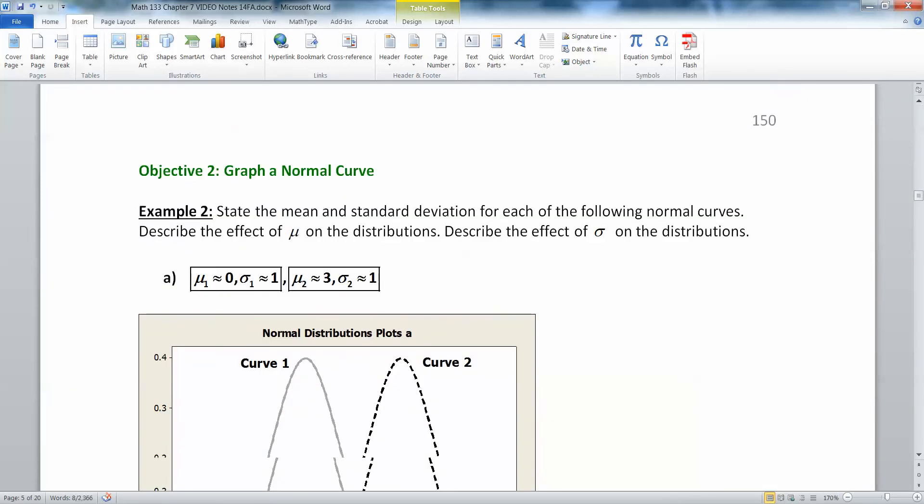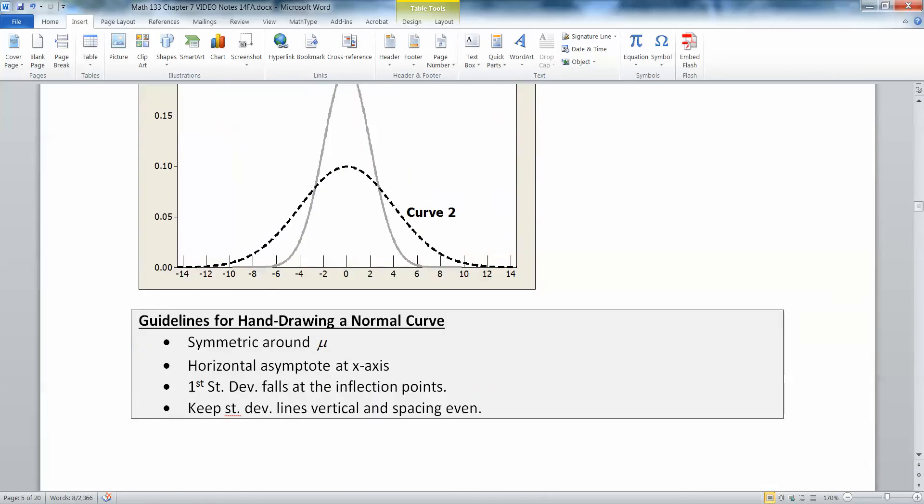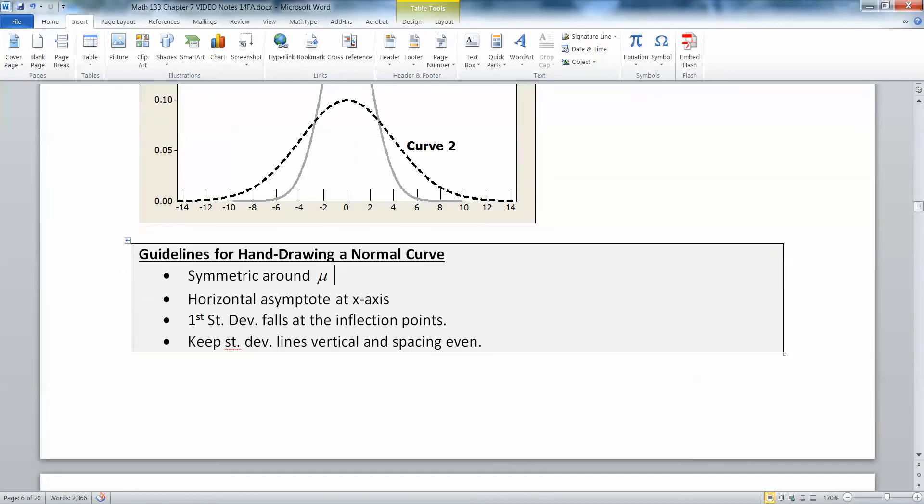All right. Now you're going to be drawing a lot of these by hand. So when you draw them by hand, you want to pay attention to several things. One, you want to draw a graph that is symmetric around your mean. Make sure it's a symmetric graph. Make sure it looks like a normal curve.